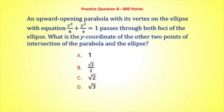Just to make this interesting, we made this question worth 3,000 points — no, it's worth 800. We wouldn't do that to you, Cameron. So it's worth 800 points. An upward opening parabola with its vertex on the ellipse x² over 8 plus y² over 4 equals 1. That parabola passes through both foci of the ellipse. What is the y-coordinate of the other two points of intersection of the parabola and the ellipse? Is that y-coordinate 1, square root of 2 over 2, square root of 2, or square root of 3?